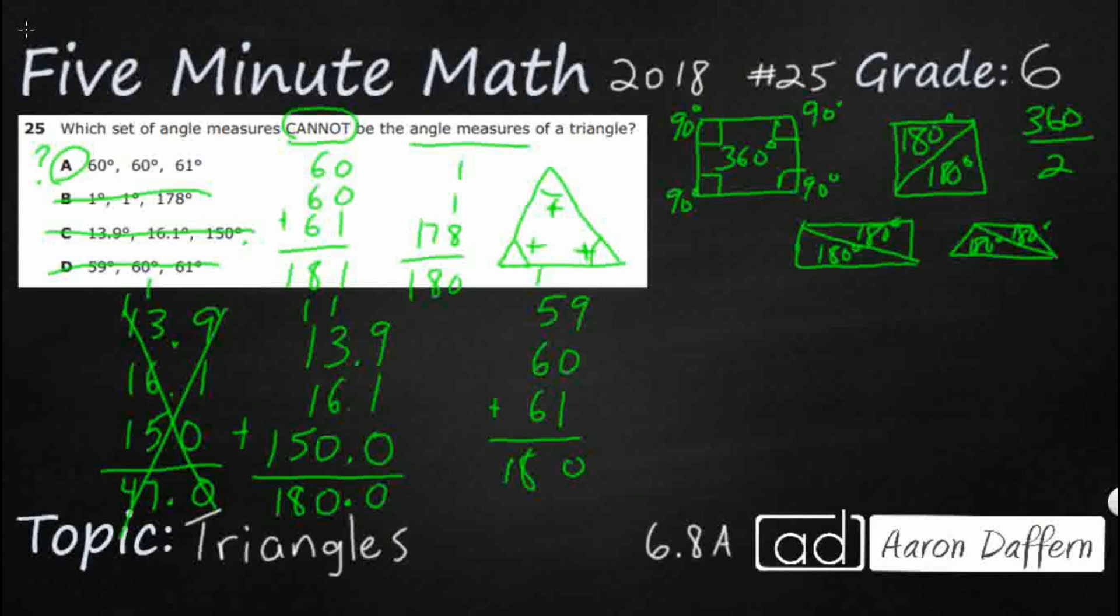So our answer is going to be A. Quickly to check this is an equilateral triangle. It has all equal. It's got 60, 60, 60. And some of you mentally might have thought, well, if you take one away from here and add it up here, guess what you get? 60, 60, 60. But either way, our answer is A, 60, 60, and 61.